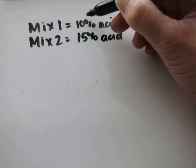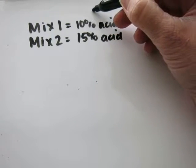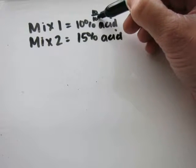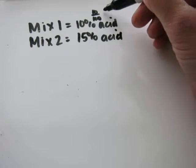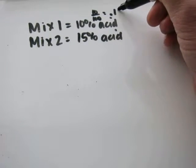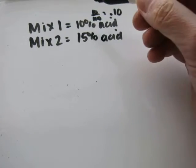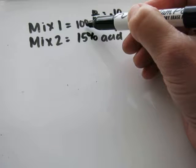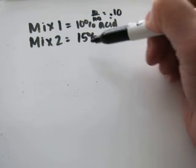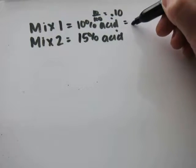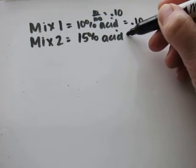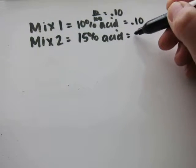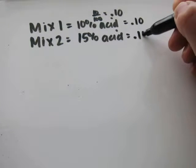Which to do that, you just take the number over 100. So it would be 10 over 100. And 10 divided by 100 equals .10. You could also use the rule of thumb where you have a percentage sign and you move the decimal point two places to the left. So this will be .10. And the 15 will become .15.